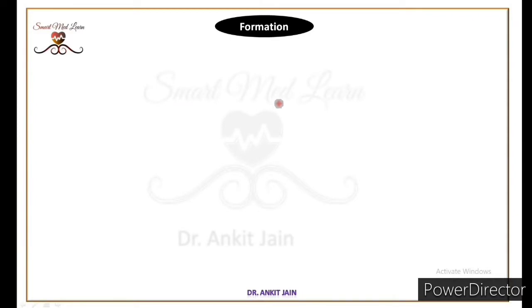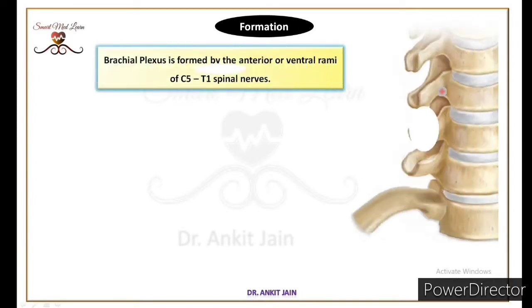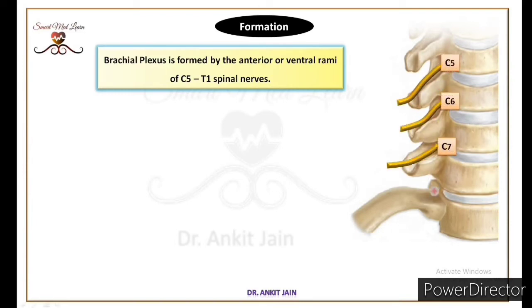Now we discuss the formation of the brachial plexus. Brachial plexus is formed by the anterior primary rami of C5, C6, C7, C8 and T1 spinal nerves.